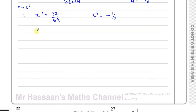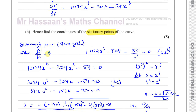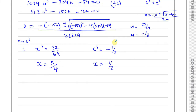To find x, we take the cube root of each. The cube root of 27 is 3 and the cube root of 64 is 4, so x equals 3 over 4. For negative values, a cube root does exist because a negative number times itself times itself gives a negative result, so the cube root of negative 1 over 8 is negative 1 half. These are the two x coordinates of the stationary points, but we need the full coordinates.